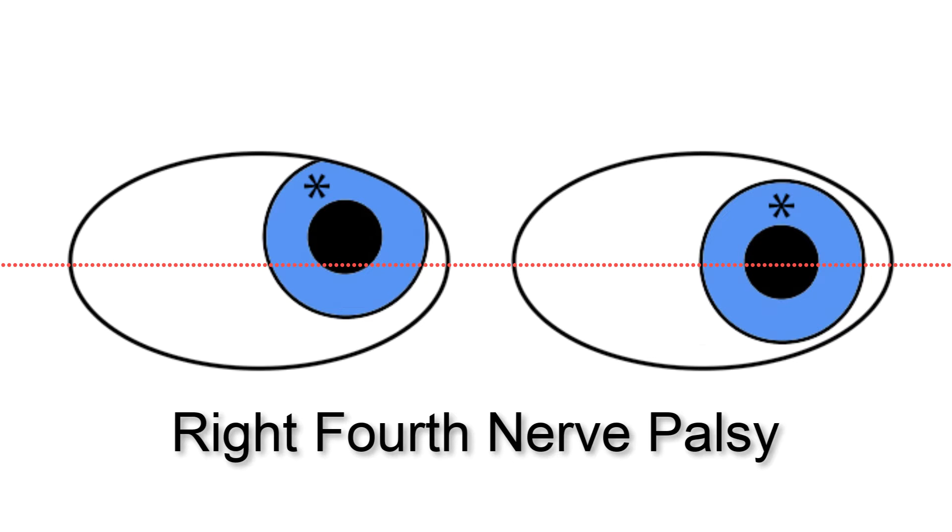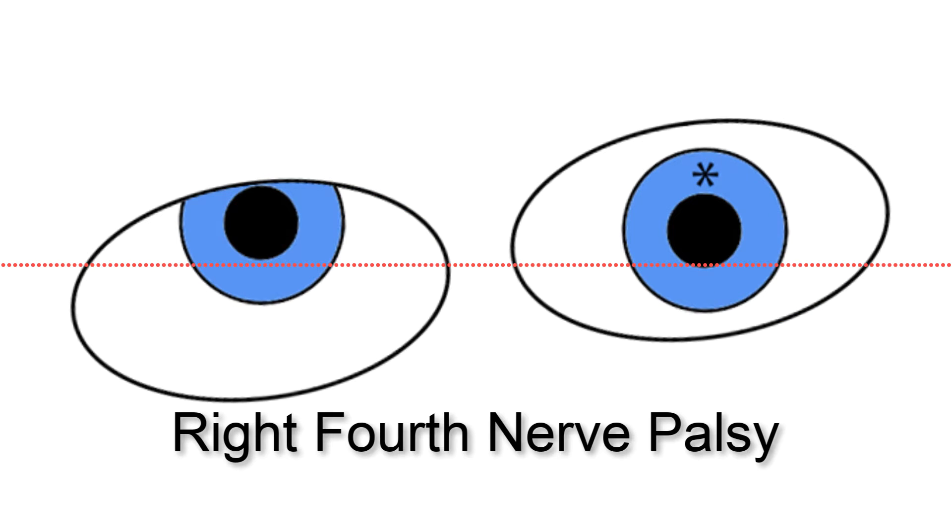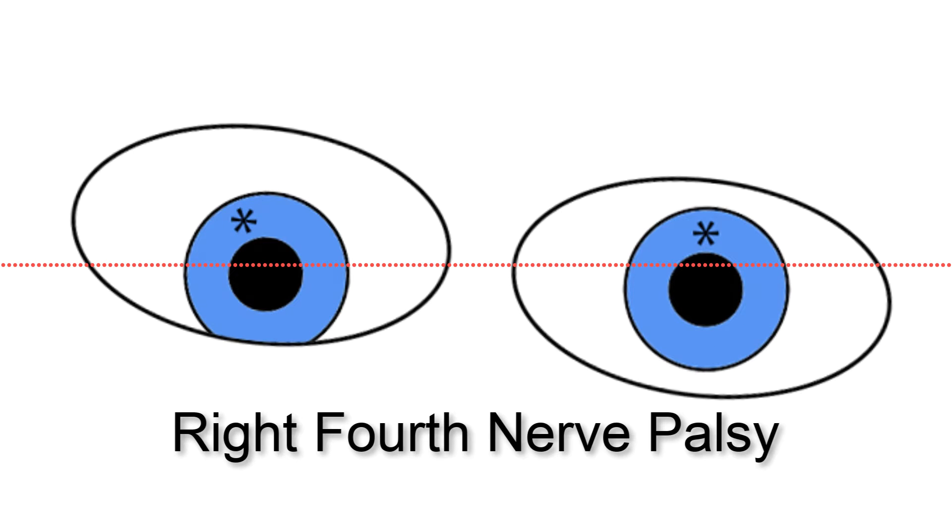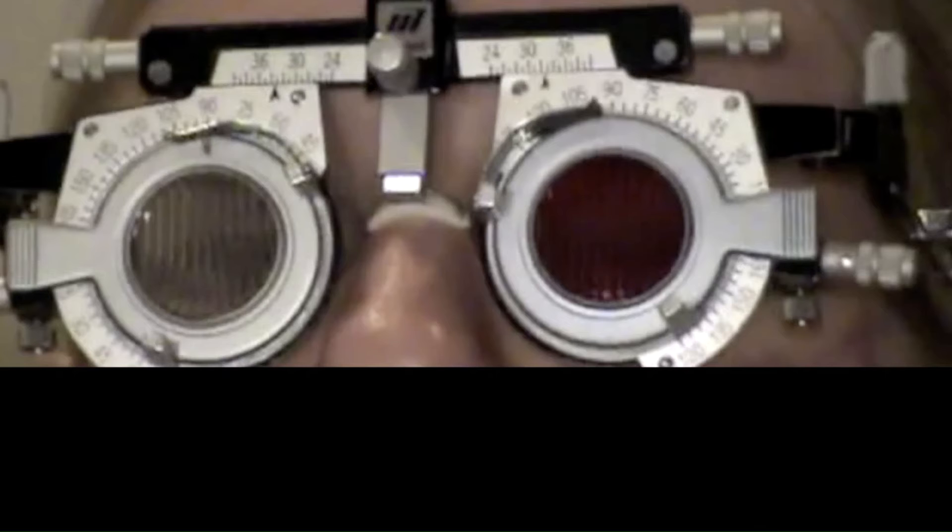Step 3. The hypertropia is greater in right head tilt than in left head tilt. When torsional misalignment is measured with the double Maddox rod test, the affected eye will display ex-cyclo deviation.